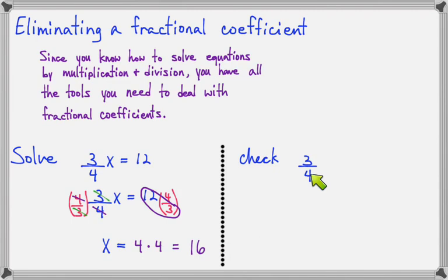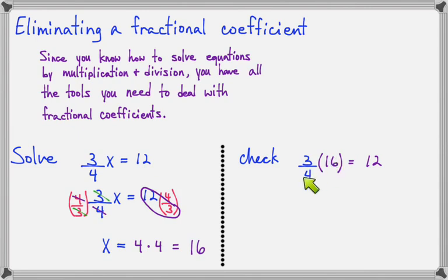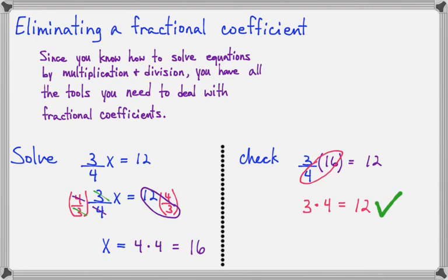We think 16 is the correct answer. Let's check it. I've got 3 fourths times my answer equals 12. I'm going to simplify 16 over 4 first — 16 divided by 4 gives me 4. Then 3 times 4 equals 12. Both sides are the same, so that means 16 was the correct solution.